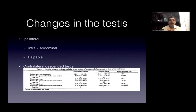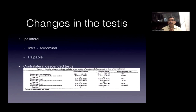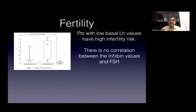What happens to the contralateral descended testes in cases of ipsilateral intra-abdominal testes in terms of fertility? The number of germ cells per tubular cross-section compared to a normal testes is much lower in children with an ipsilateral intra-abdominal testes, and this is more so in children born small for gestational age. Hormonal evaluation shows that patients with low basal LH and where LH does not rise in mini-puberty have a significant decrease in fertility. There is no correlation between inhibin values and FSH over time.